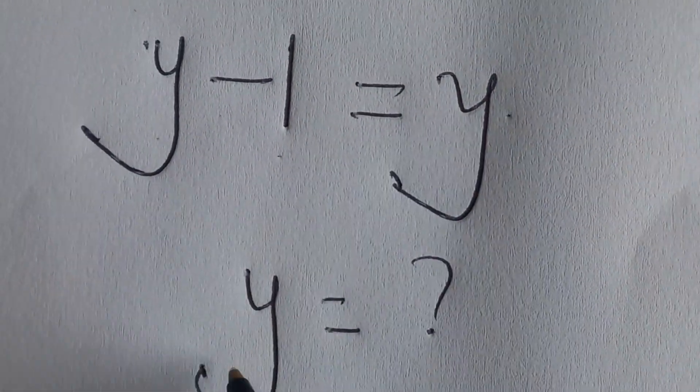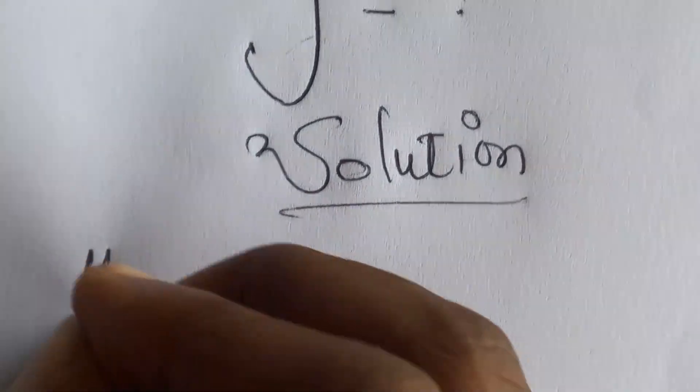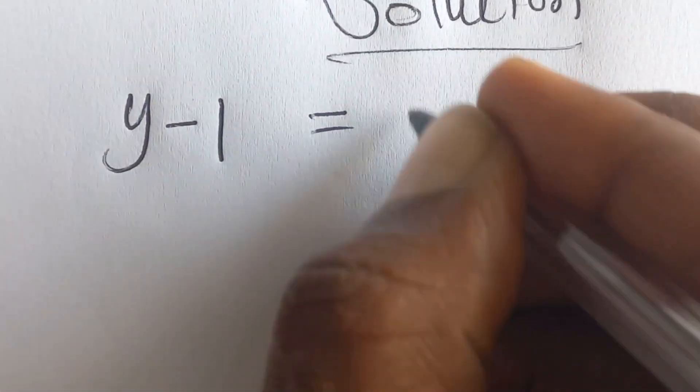So let's start. We have y minus one is equal to y. So from here, let's square both sides.